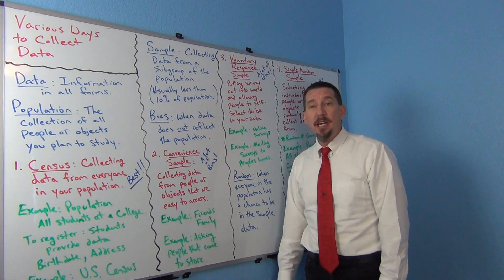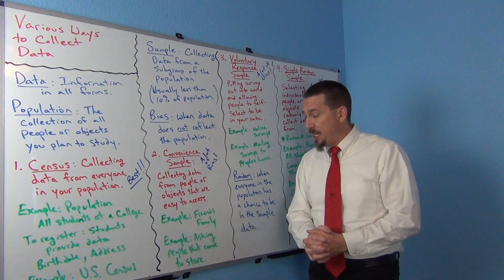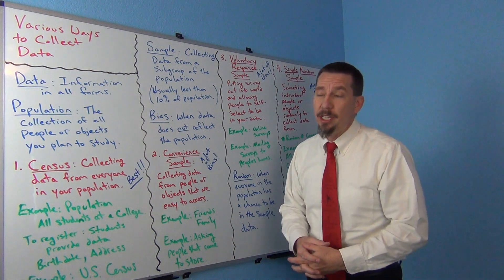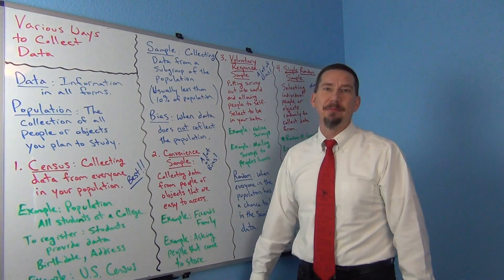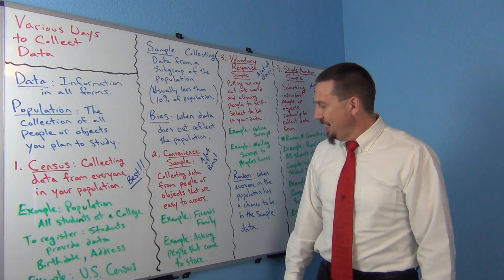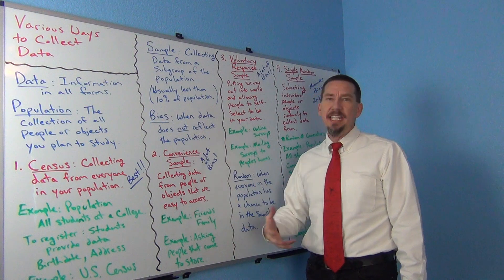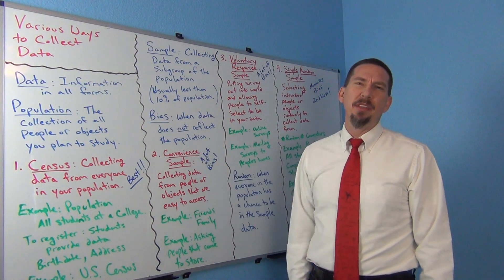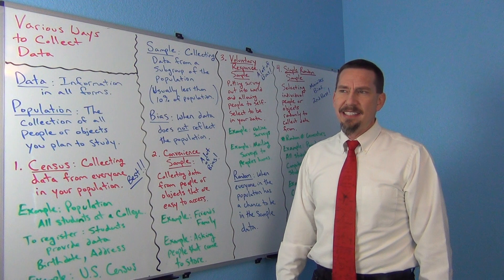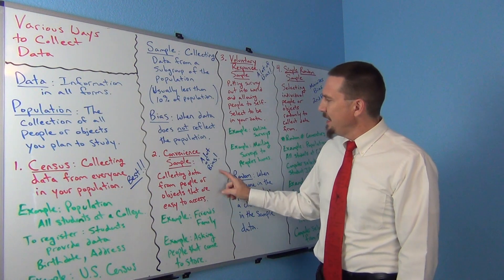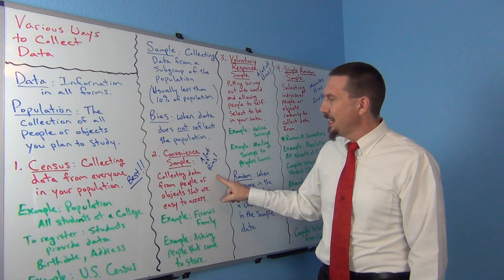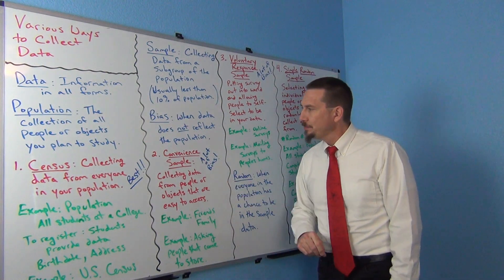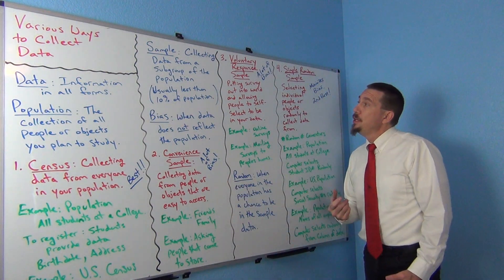Another example of convenience sampling might be standing outside a store and asking people as they come out — 'What do you think about taxes?' That's a very convenient, easy method where you get data from people you have easy access to, but it's not going to reflect populations very well.